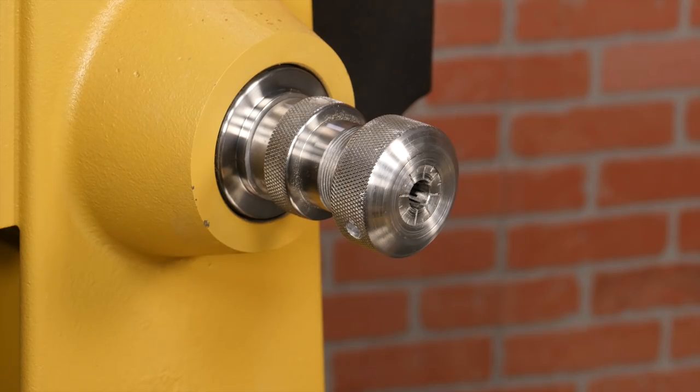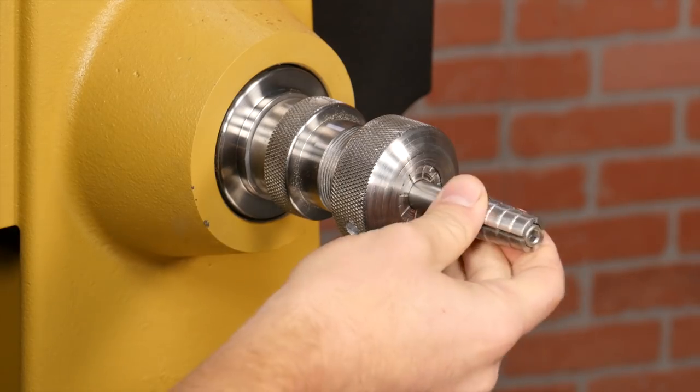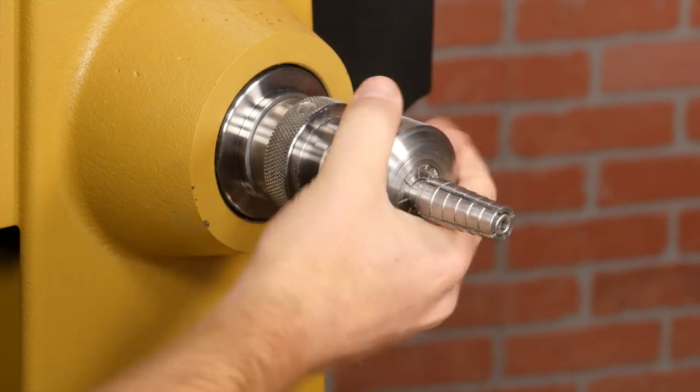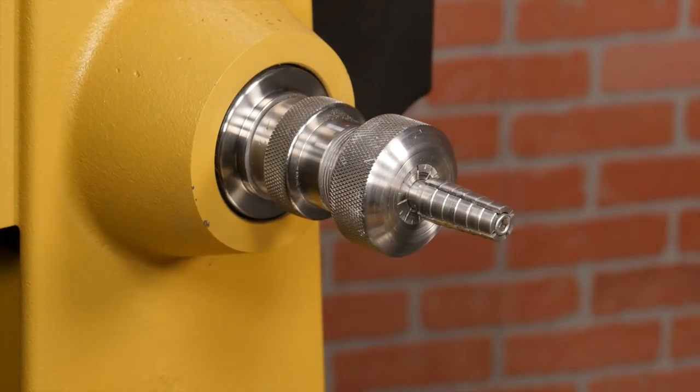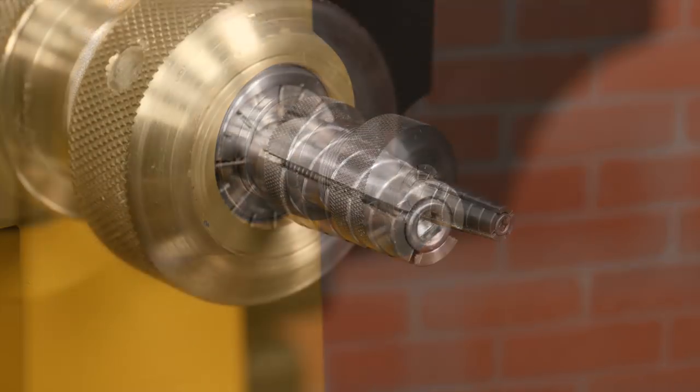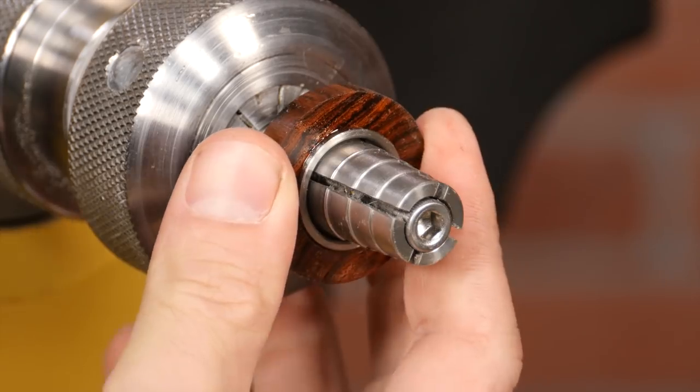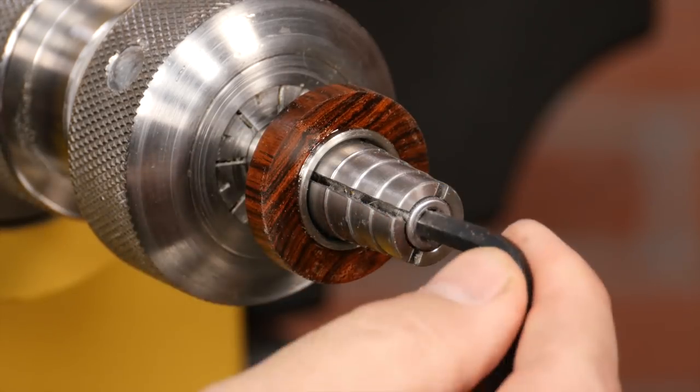I'll mount the pro ring mandrel inside a collet chuck because I want the most accuracy. However, there are other mounting options that'll do the job. Insert the ring core onto the correct size step and lightly tighten with the hex wrench.